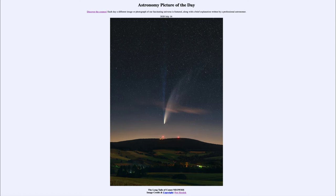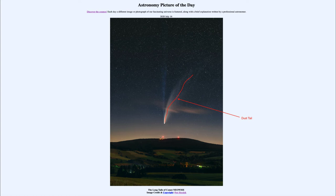We see the two tails of the comet. On the right-hand side we see the dust tail stretching back in a yellowish color, curved off to the right. The dust is heavier particles pushed back by the Sun's energy, so the Sun would be down below the horizon in this image. The dust particles also lag behind in the orbit, so the comet is moving from right to left, and those particles are left behind. The dust tail tells us both the direction of the Sun and the direction of motion of the comet.